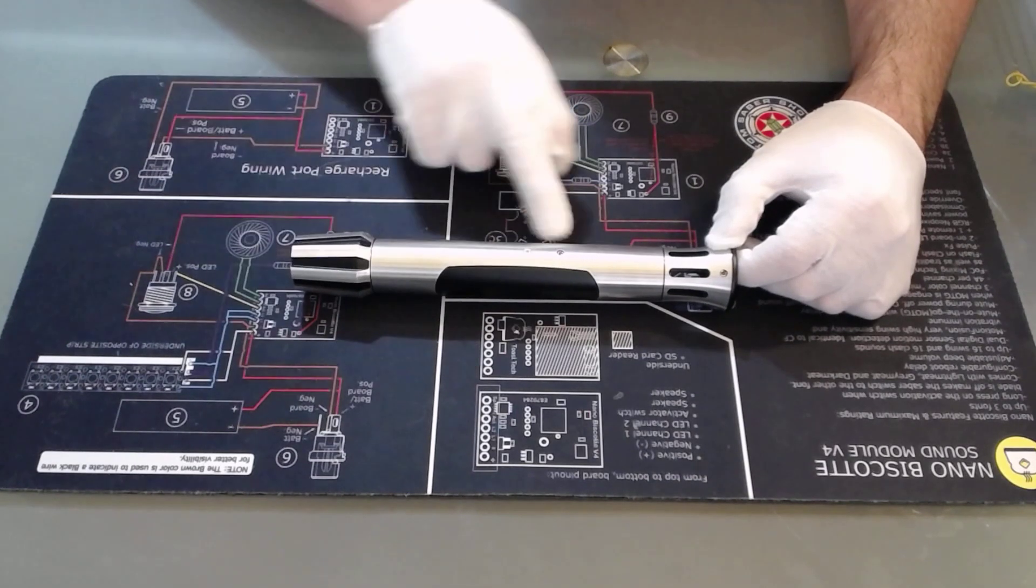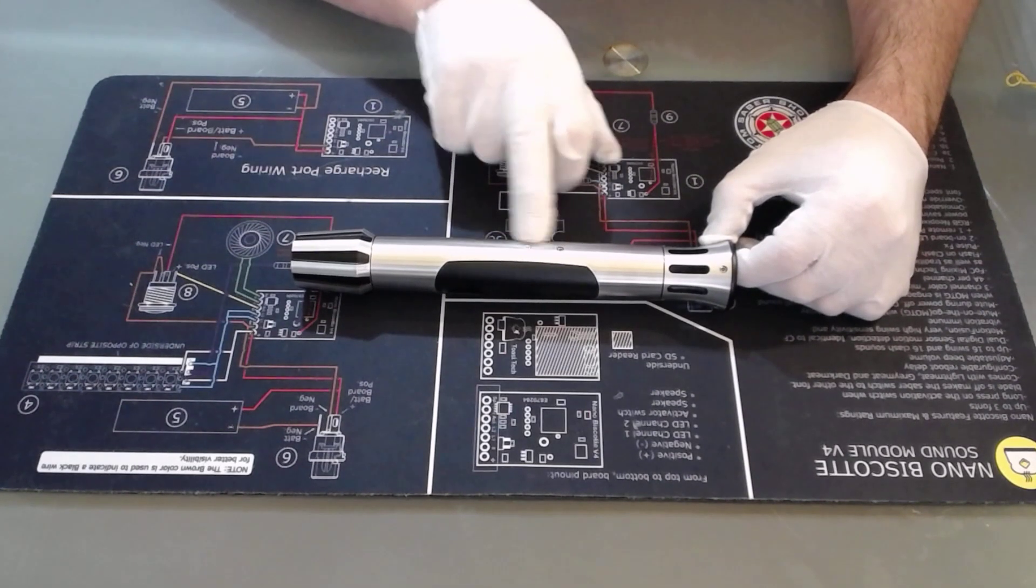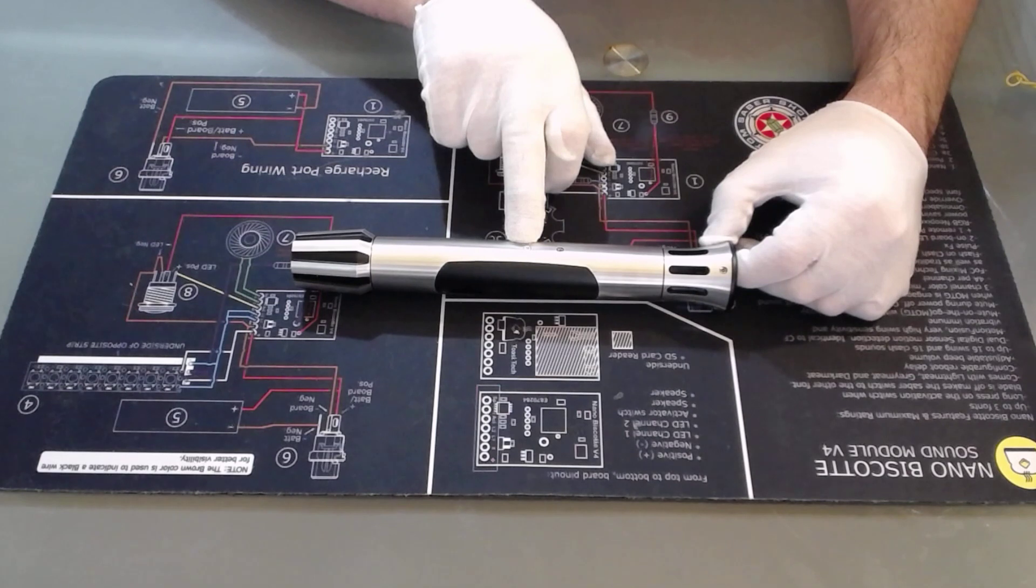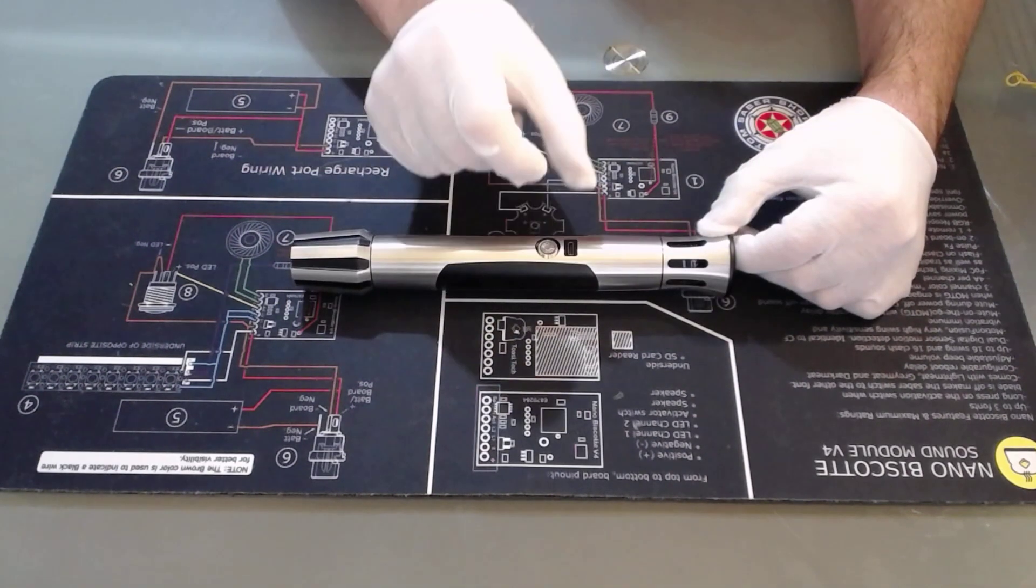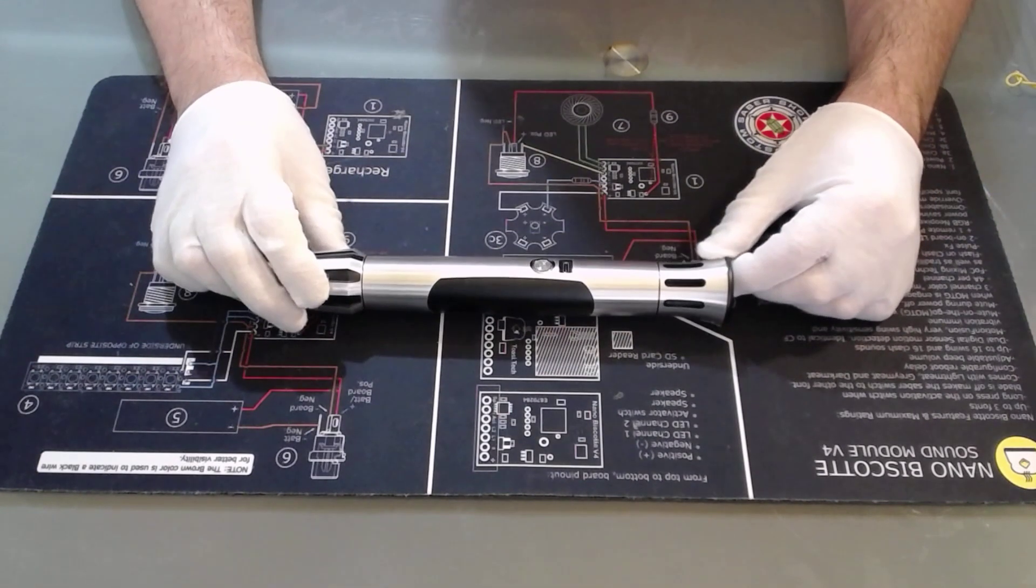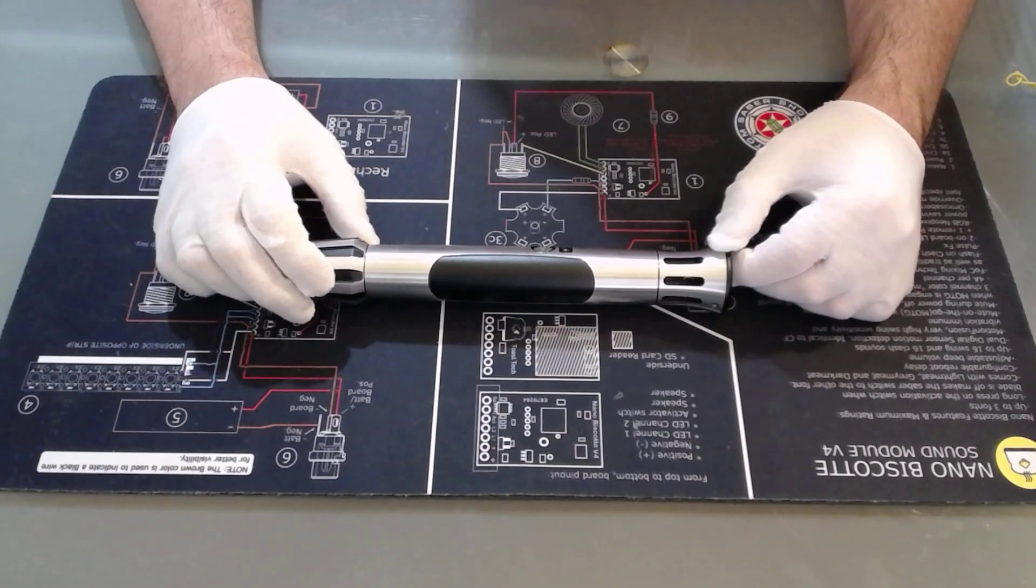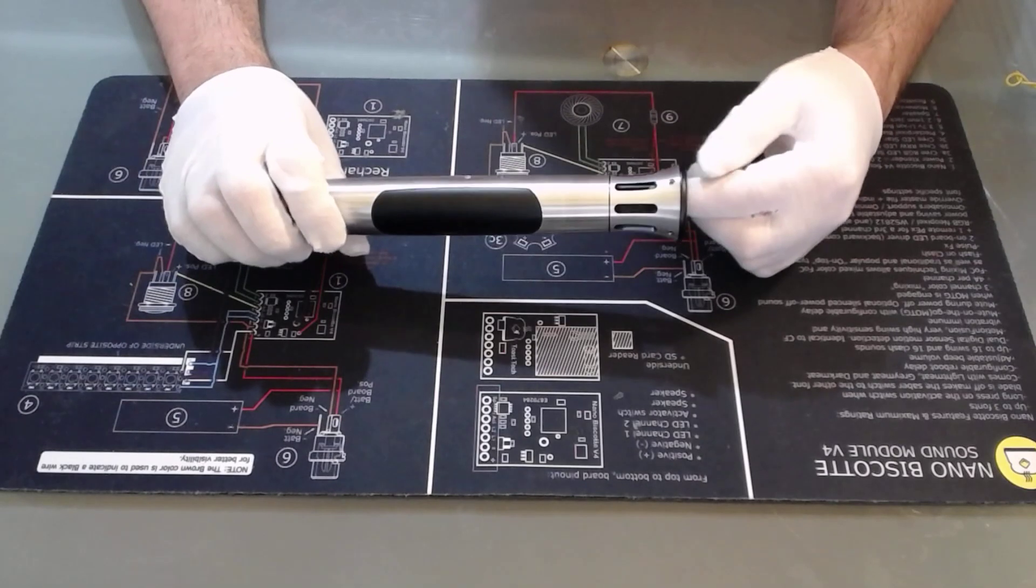On the back we have a couple of screws. We have the chassis retention screw that keeps the chassis in place, and then we have this little grub screw here which pushes the switch and recharge port assembly into the recesses on the saber.